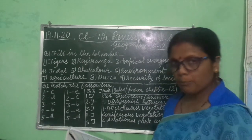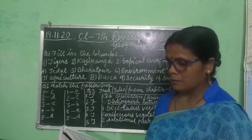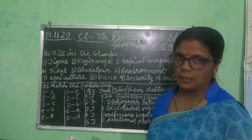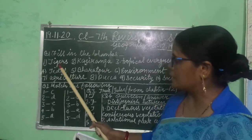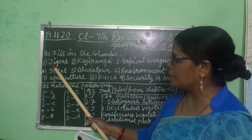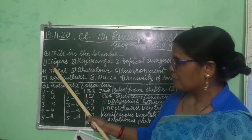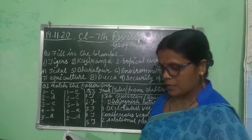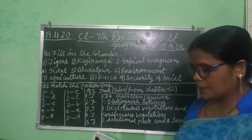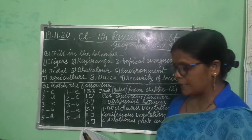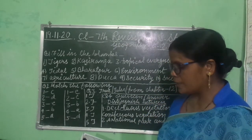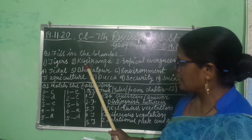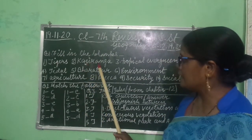Blanks: Tigers are preserved in Corbett Park. Kya preserved kiya jata hai? Tigers. Second, the rhino project is being implemented at the wildlife sanctuary of Assam. Kya hai? Kaziranga.